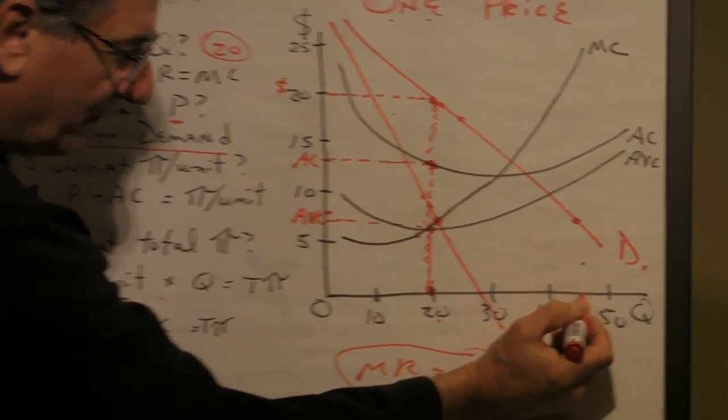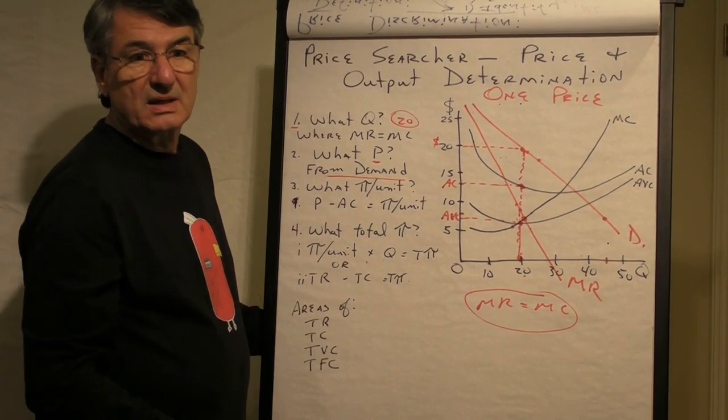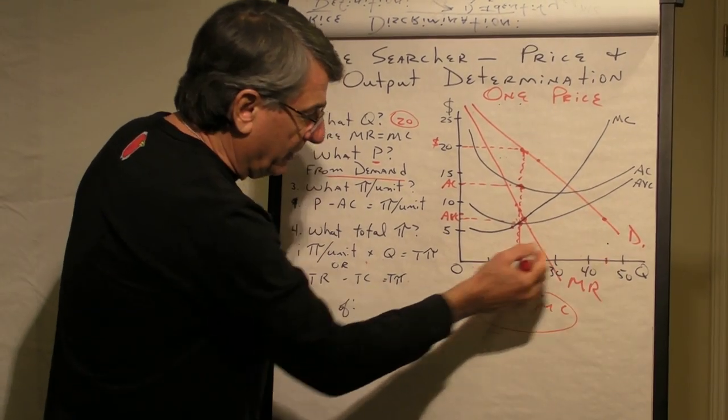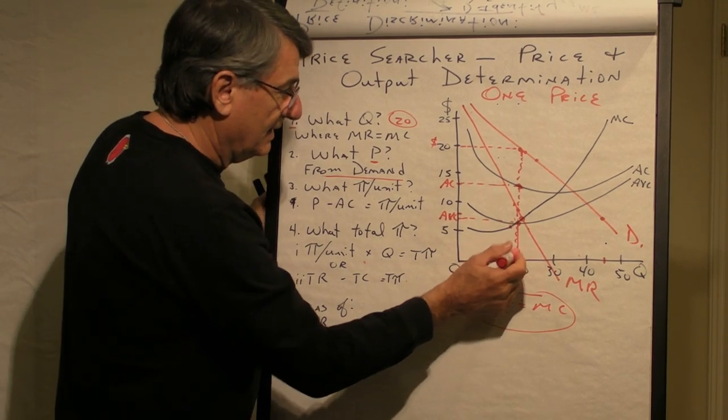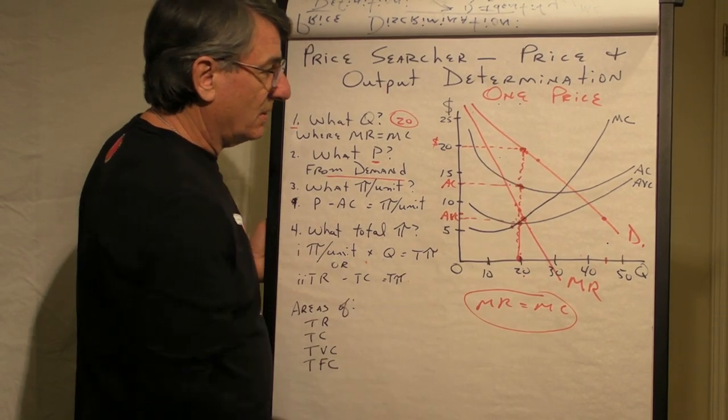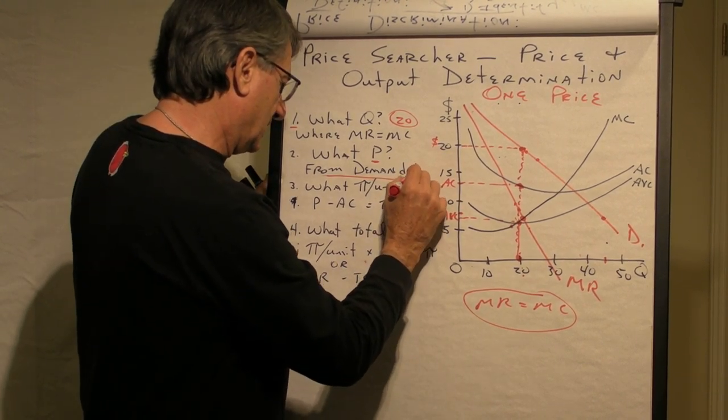and you're not going to produce more than 20 units, so there will be 45 people trying to buy 20 units, it won't take you very long to find out that demand is what determines the price. So, the price is going to be $20.